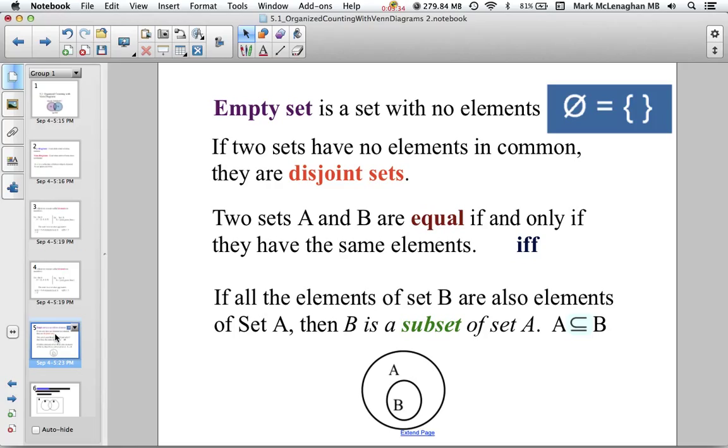If two sets have no elements in common, they're called disjoint, which means there's nothing common about them. Two sets A and B are equal if and only if—the notation there is IFF—they have the same elements. If and only if means the definition works both ways. An if-and-only-if works both ways, whereas an if statement only works one way.